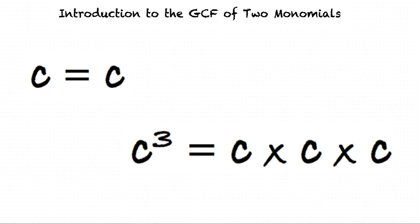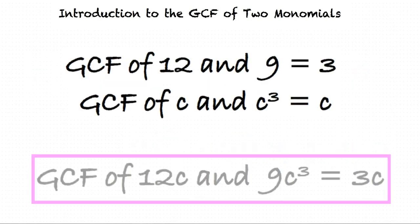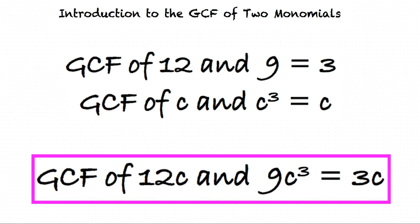These two variables only have 1c in common. So, the GCF of c and c to the third power is c. So, the GCF of 12c and 9c to the third is 3c? Exactly. Combine both factoring steps to result in our final answer.